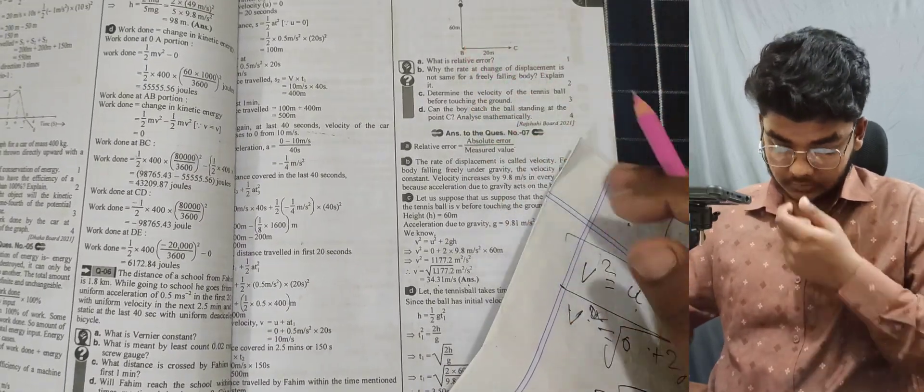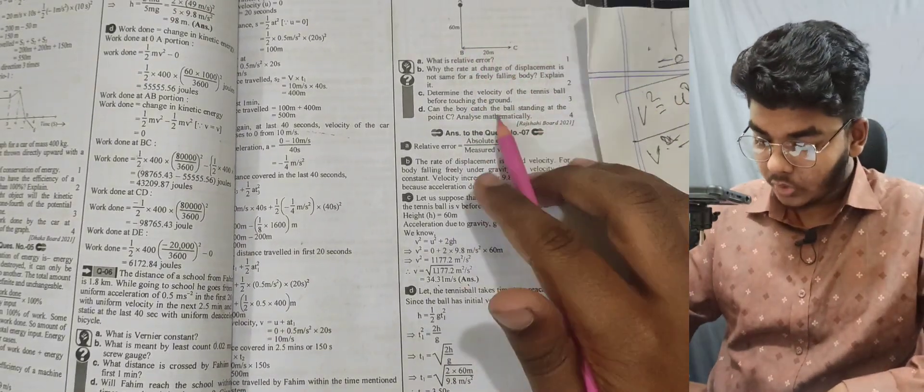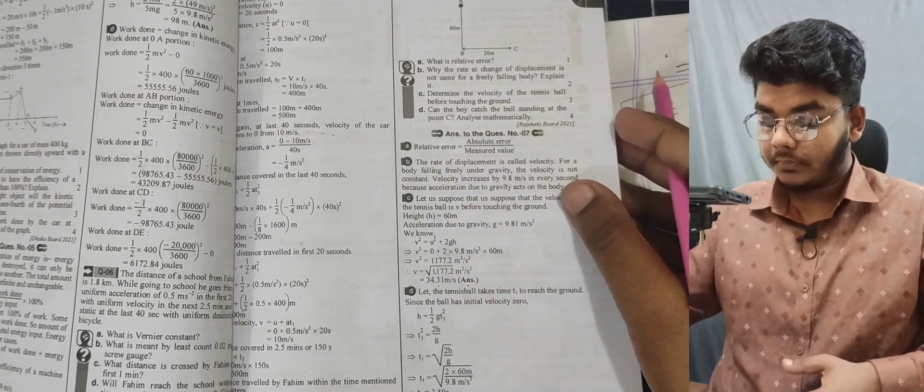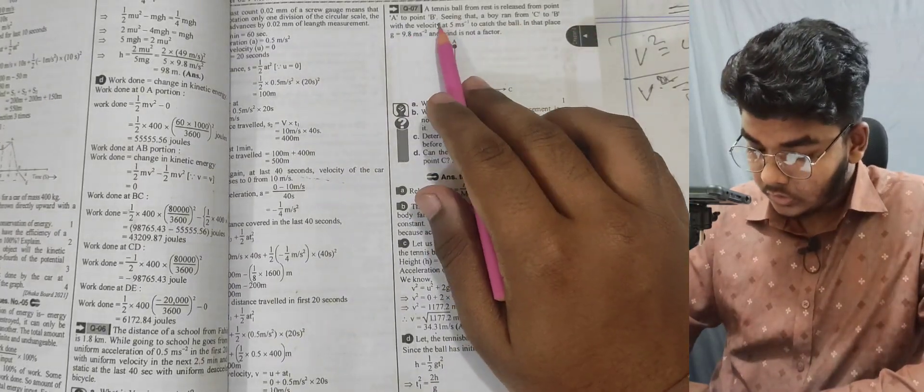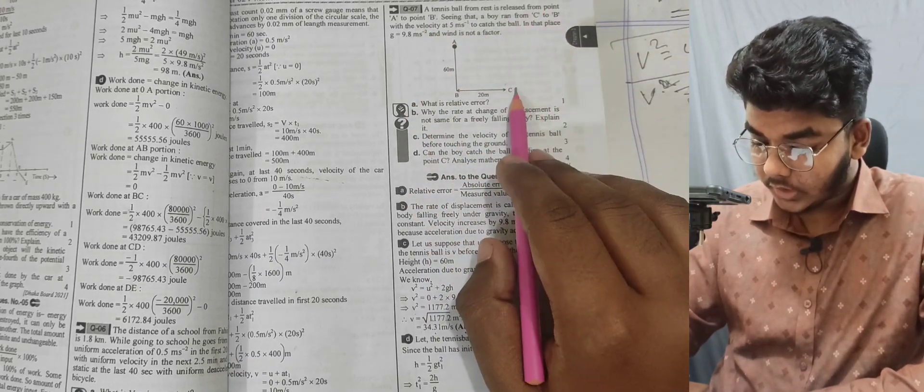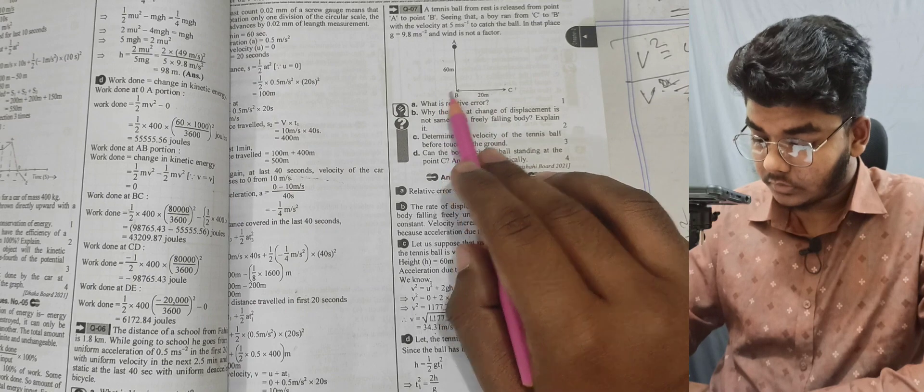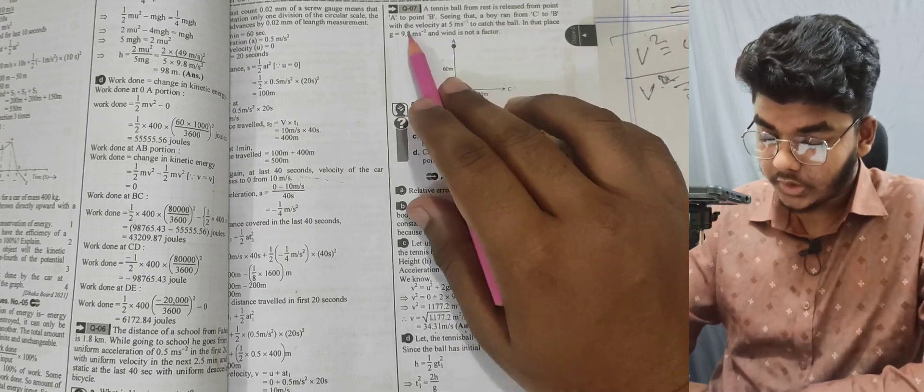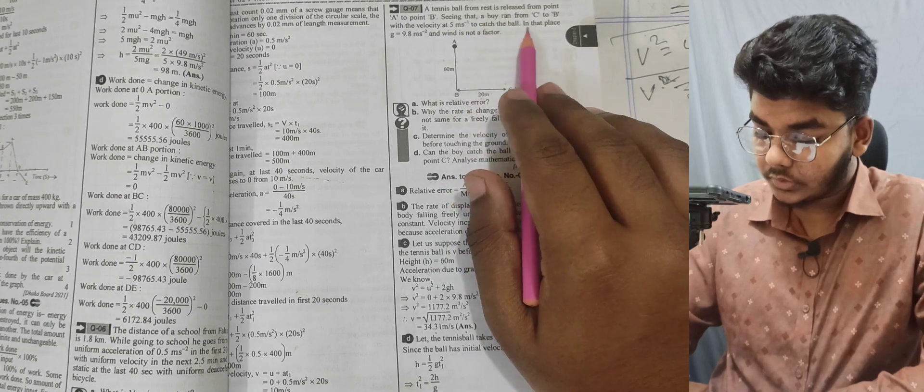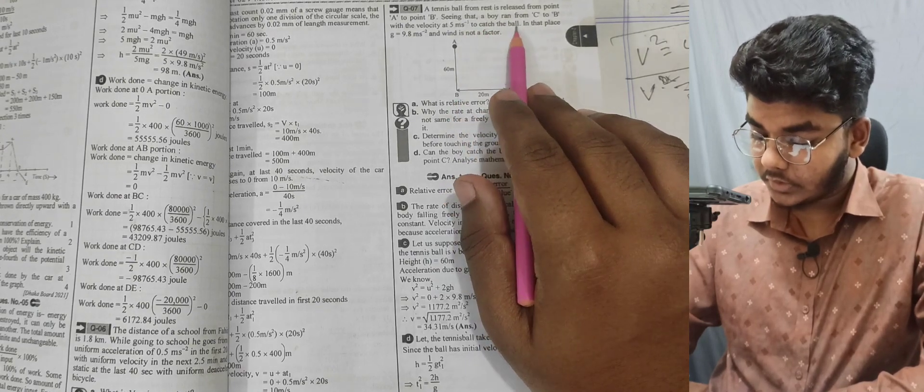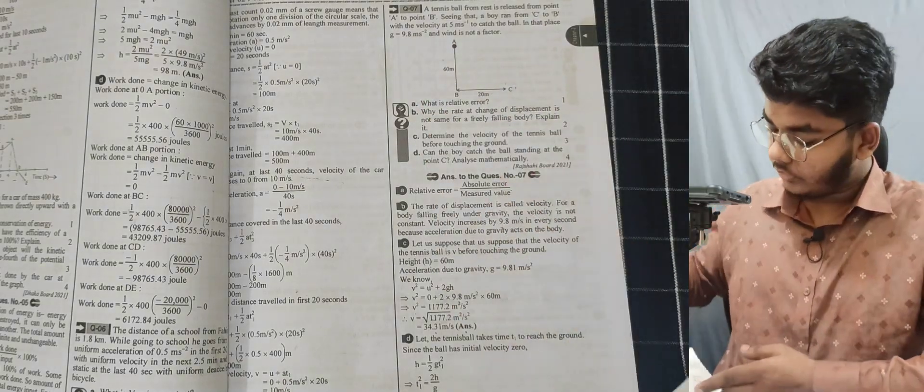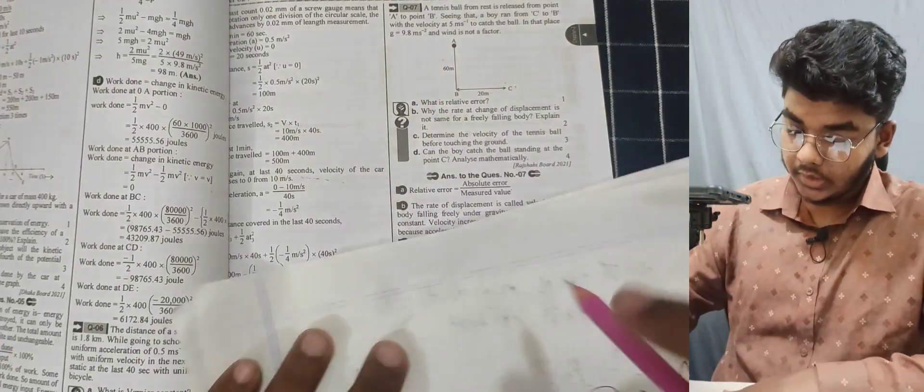Can the boy catch the ball standing at point C? A boy runs from C to B, a 20 meter distance. The boy needs to catch the ball with velocity of 5 meters per second.